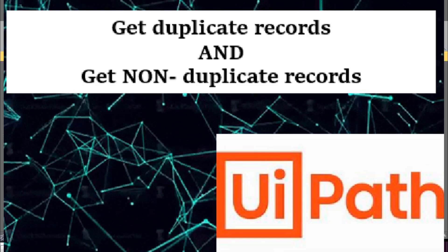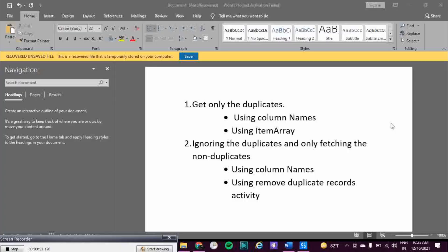Hi, welcome to my video. Today I'm going to explain how you can get only the duplicate records, and how you can ignore the duplicate records and get only the non-duplicate records. To do this there are two scenarios: one where you only need to check based on specific columns to identify duplicate records, and another where the entire row should be considered for checking the duplicate record.